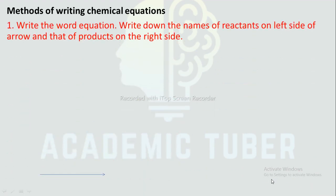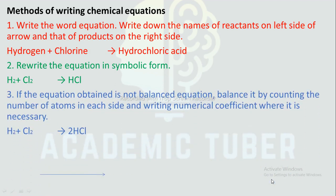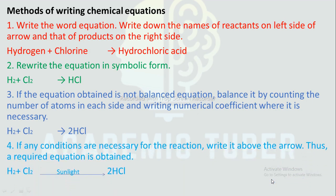Methods of writing a chemical equation: First, write the equation in words with the name of reactant on the left hand side and that of product on the right hand side — for example, hydrogen plus chlorine gives hydrochloric acid. Then rewrite the equation in symbolic form: H₂ + Cl₂ → HCl. If the equation is not balanced, balance it by counting atoms on each side and writing numerical coefficients where necessary: H₂ + Cl₂ → 2HCl. If any conditions are necessary for the reaction, write them above the arrow — thus: H₂ + Cl₂ in the presence of sunlight gives 2HCl.